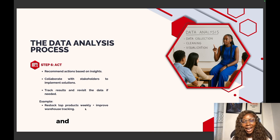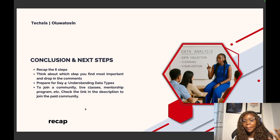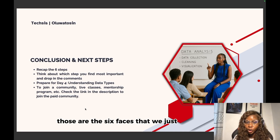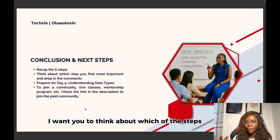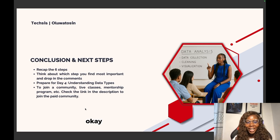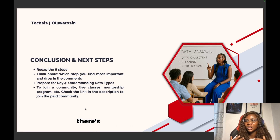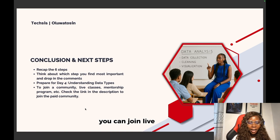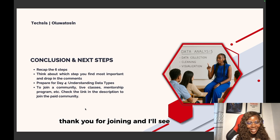So that is the data analysis process, and I hope you find it as interesting. Let's recap the six steps: Ask, Prepare, Process, Analyze, Share, and Act. Those are the six phases. Read more about it, try to digest it, and think about which step you find most important — let me know in the comments. In Day 4, we are going to be talking about data types, which is important to understand when analyzing data. You can also join live classes and mentorship programs by checking the link in the description.